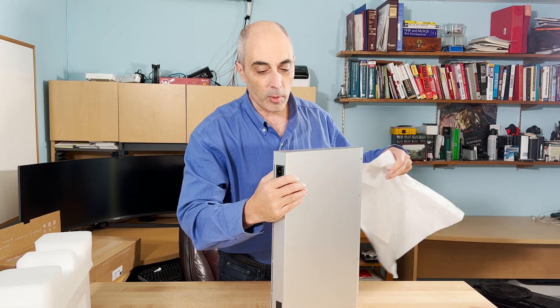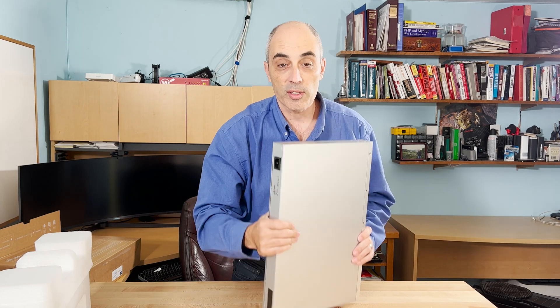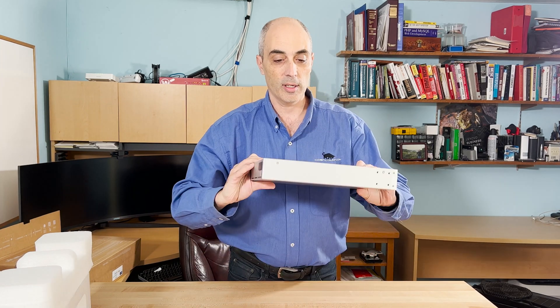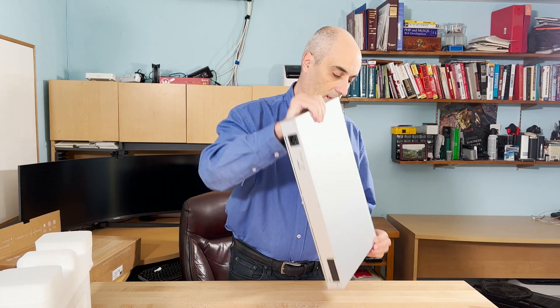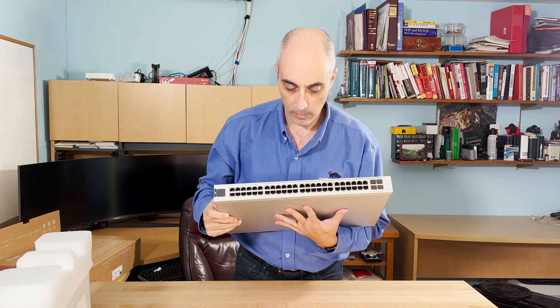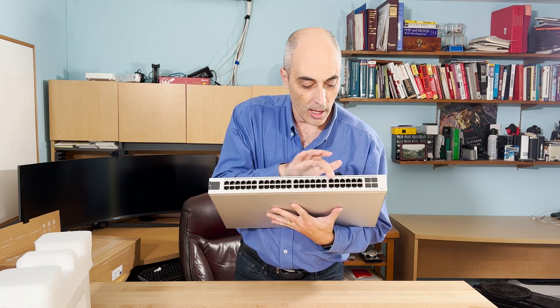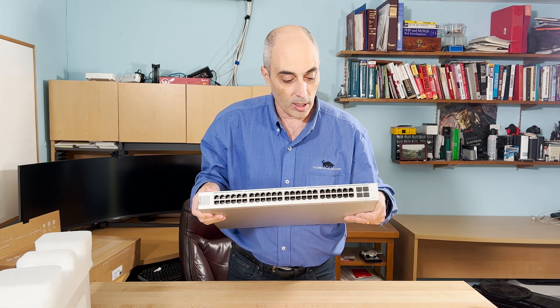Like most switches, what you'll find is there's nothing on the sides - both sides - and in the back you'll find the power. The business end is right here. What you'll find are gigabit ports in the front, so that's the speed of it.